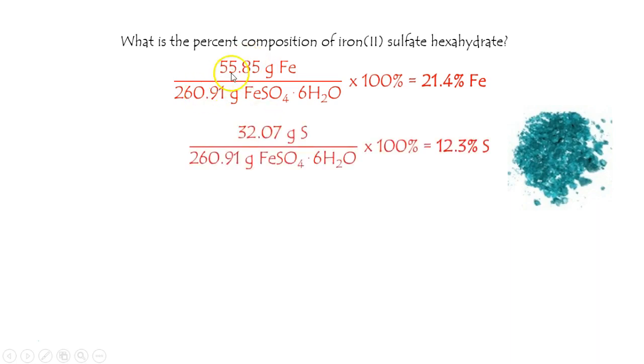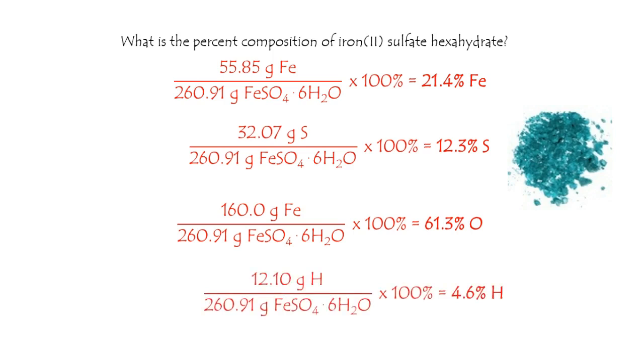Since 55 of the 260 come from iron, that's 21% roughly. 32 of the 260 comes from sulfur. I think you can see what we're doing here. The vast majority of it comes from oxygen and the rest comes from hydrogen.